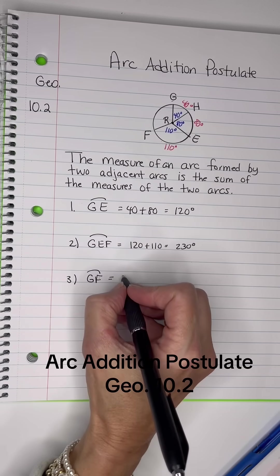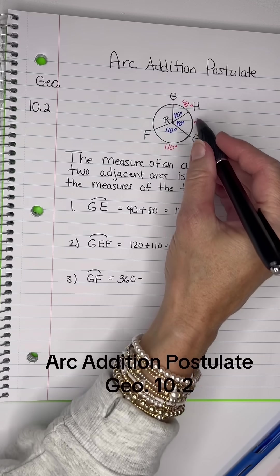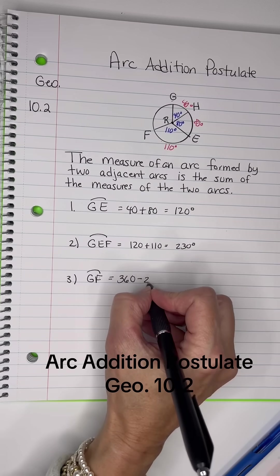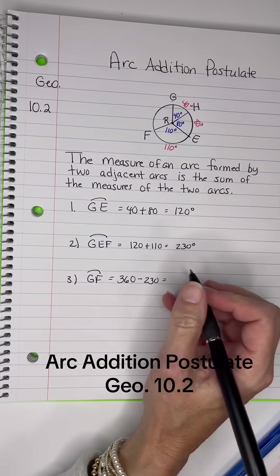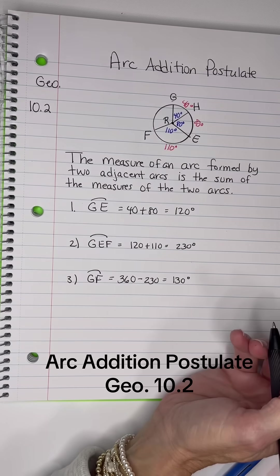The easiest way to do it would be to take 360 and subtract off the GEF part, which is 230. So 360 minus 230 equals 130 degrees.